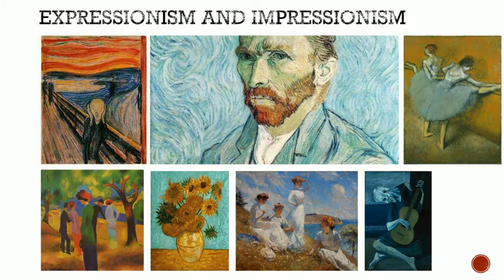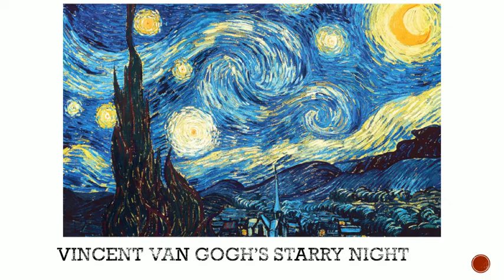In the late 1800s we saw impressionism — trying to create an impression of an image — and we begin to move toward expressionism, painting as a way of expressing emotion, not just giving an impression. Look at paintings like Munch's The Scream, or Degas or Van Gogh — you see emotion in faces, mood and serenity in the ballerinas, people in a park invoking feeling. Van Gogh's name, by the way, is pronounced more like 'Van Goch' in Dutch.